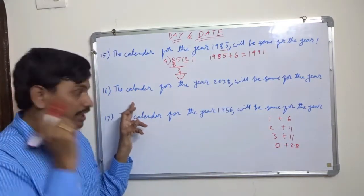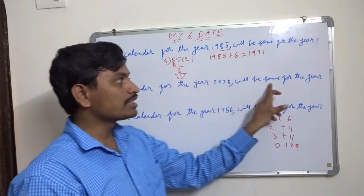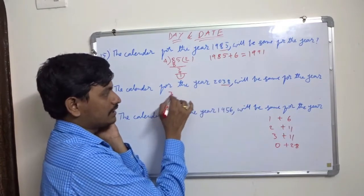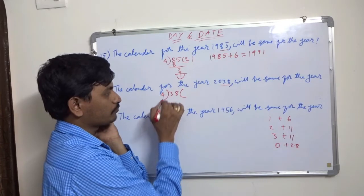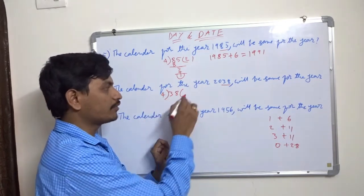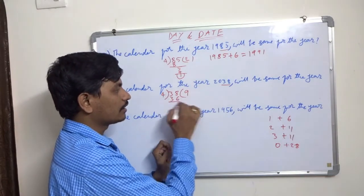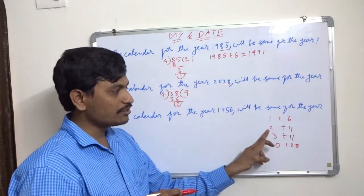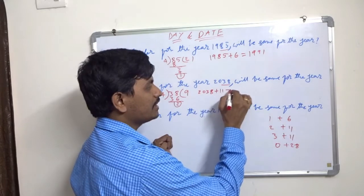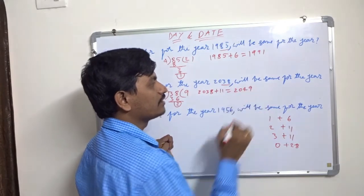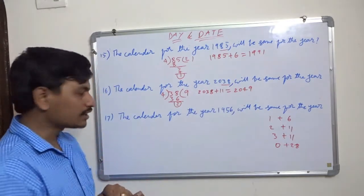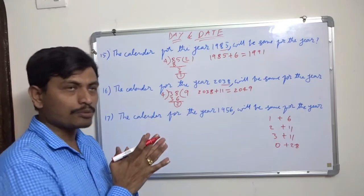Next question: the calendar for 2038 will be same for which year? Last two digits: 38 divided by 4 — 4 × 9 = 36, remainder is 2. If remainder is 2, we add 11. So 2038 + 11 = 2049. The year 2038 will repeat in 2049.